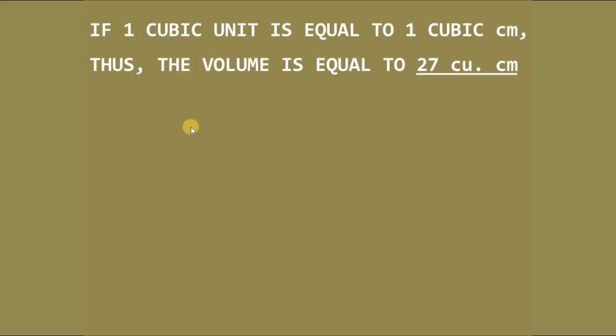So one cubic unit is equal to this, this one small box that we use to measure as a standard unit in finding the volume of the big box in example number one. One cubic means we have one unit of the width.